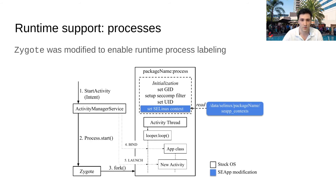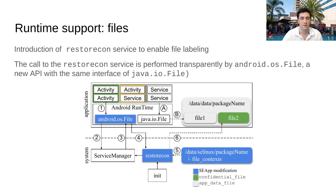With regard to runtime support, we need to ensure processes are labeled according to the policy. We therefore implemented some changes in Zygote, which is the native service that spawns and sets up new application processes. As you can see from the figure, a new step was introduced to set the domain according to the local SEAP context, just before the logic of the process kicks in. If no information from the local SEAP context is available, the system SEAP context is used as a fallback. The security context of files is set upon creation, according to the content of the local file context.